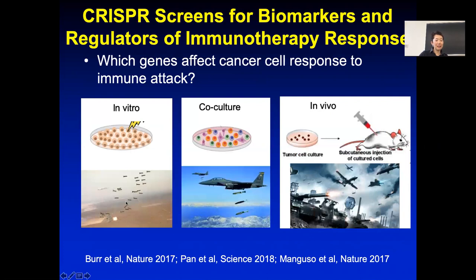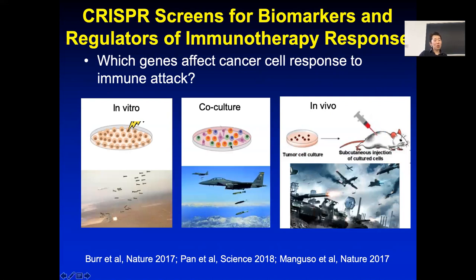The second type of study goes further: CD8 T cells not only secrete cytokines but also use perforin to punch holes in cancer cells and secrete granzyme—another toxic agent—to induce cancer cell death. So you can co-culture cancer cells with immune cells like CD8 T cells, natural killer cells, or macrophages to see how cancer cells respond to killing. In all these studies so far, the CRISPR is in the cancer cells—you're checking every gene in the cancer to see how it responds to cytokine or immune attack.